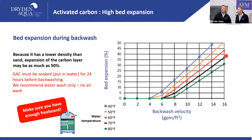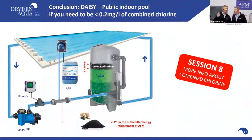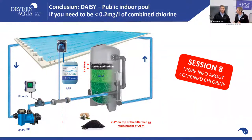The ideal backwash velocity would be 16 gallons per minute per square foot, which gets you roughly 30% expansion — or even up to 50% with colder water. So make sure you have enough freeboard. This is a very effective, low-cost solution and alternative to reducing combined chlorine in indoor pools.